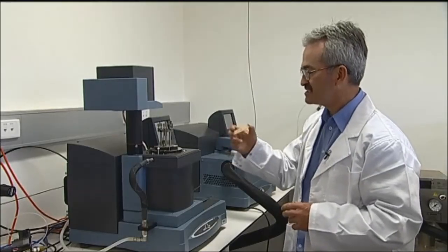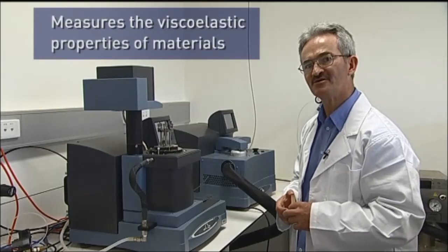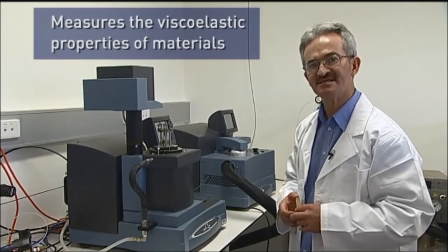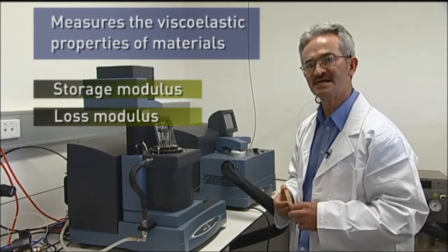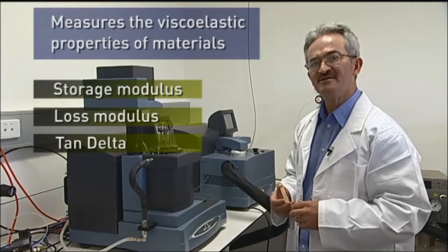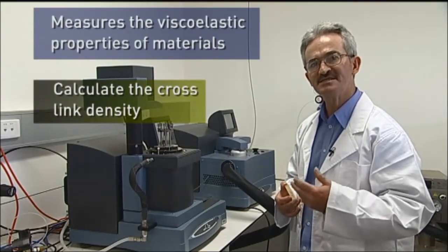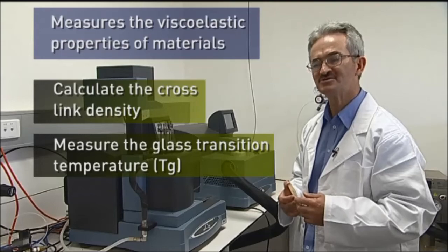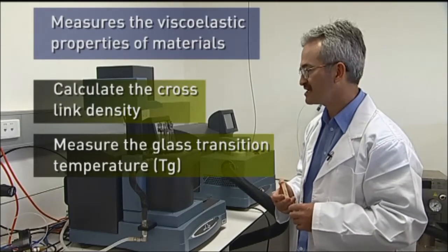With this instrument, we are able to measure the viscoelastic properties of polymeric materials, such as the storage modulus, loss modulus, and tan delta. From these values, we can calculate the crosslinking density and also measure the glass transition temperature of the particular polymeric material.